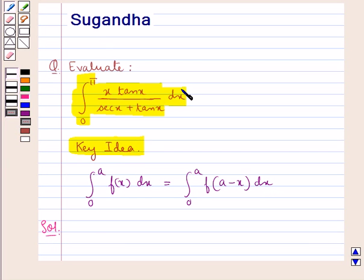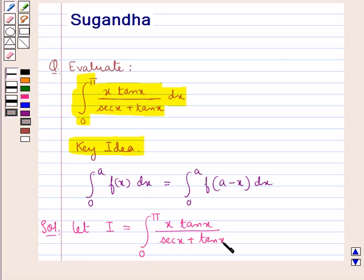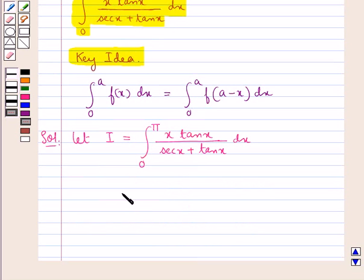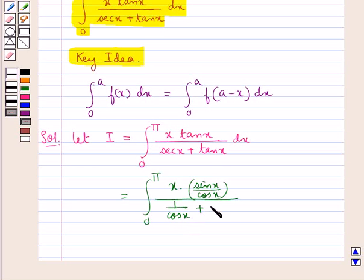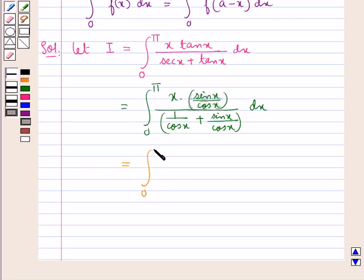We need to evaluate this integral. So we suppose that I equals the integral from 0 to π of x tan x over sec x plus tan x dx. This can be written as the integral from 0 to π of x times sin x over cos x, divided by 1 over cos x plus sin x over cos x dx. Further, this simplifies to the integral from 0 to π of x sin x over 1 plus sin x dx.